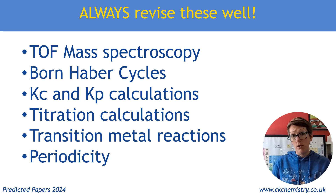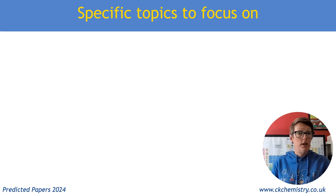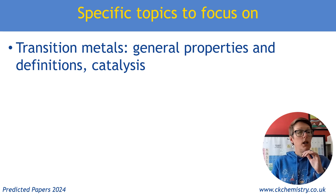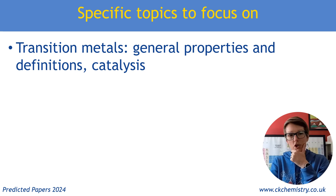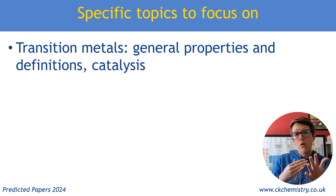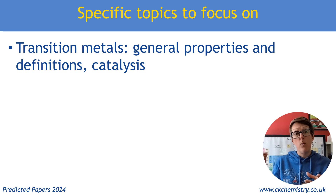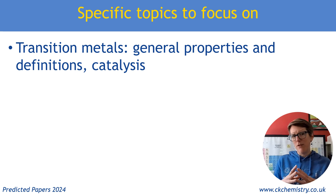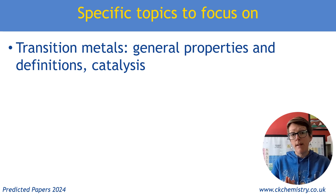A few things that I think you should also put maybe a little extra focus on for this year's paper 1. When it comes to transition metals, make sure that you know the general properties in terms of coloured compounds, catalysis, the definitions of what a transition metal is — forming stable ions with a partially filled d orbital. Make sure you're confident that you could explain why one metal is a transition metal and one isn't. And make sure that you know those little bits about catalysis — not been in for a while — your vanadium oxide catalysis in the contact process, difference between heterogeneous and homogeneous, which can come up in a rates question.